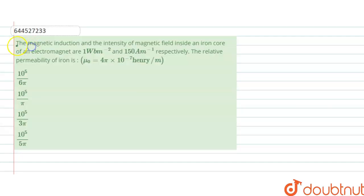The question is: the magnetic induction and the intensity of the magnetic field inside the iron core of an electromagnetic are 1 Wb/m² and 150 A/m inverse respectively. The relative permeability of iron, where μ₀ = 4π × 10⁻⁷ henry per meter.